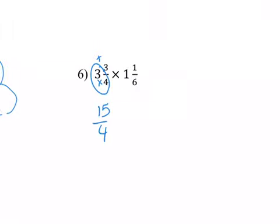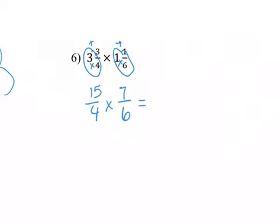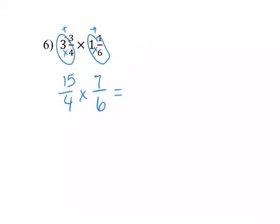And then I need to do the same thing with 1 and 1/6. So 1 times 6. Plus 1 is 7. Over 6. Okay. We can try to reduce it here first. So think about your factors of 4 and 7. They don't have any that match up.